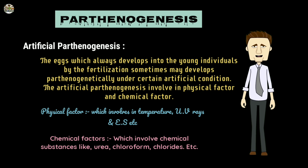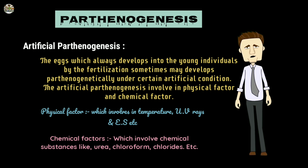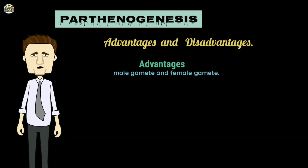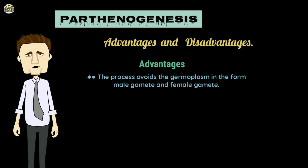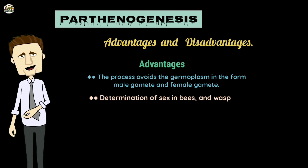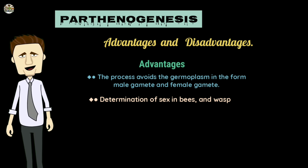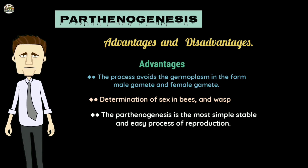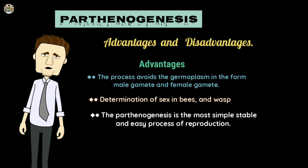Chemical factors involve chemical substances like urea, chloroform, etc. Advantages: this process avoids the need for germplasm in the form of both male and female gametes, and it helps in the determination of sex in bees, wasps, etc.